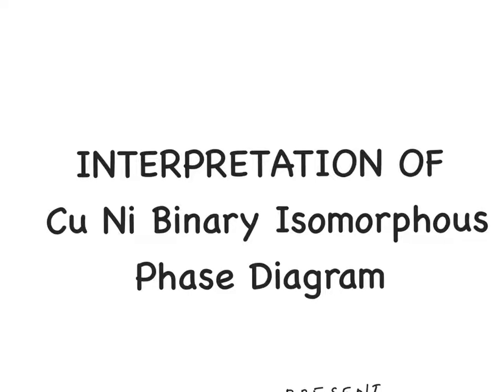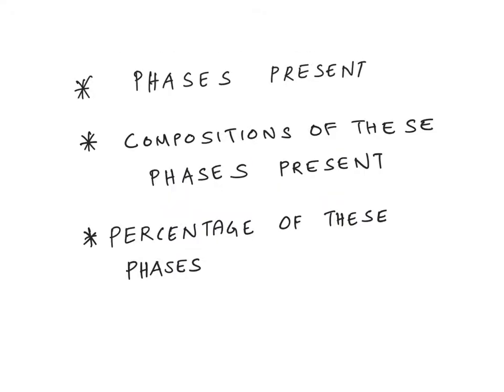In the last video we looked at copper-nickel binary isomorphous phase diagrams and briefly described what is on the y-axis and x-axis and what it represents. Now we need to interpret the diagram in more detail. Interpretation of a phase diagram mainly involves determining: what are the different phases present, what is the composition of each individual phase, and if I take 1 kg of my whole alloy, what will be the fraction or percentage of these phases.